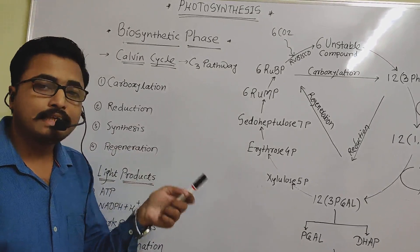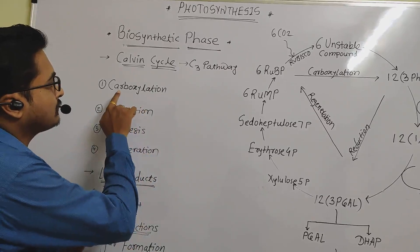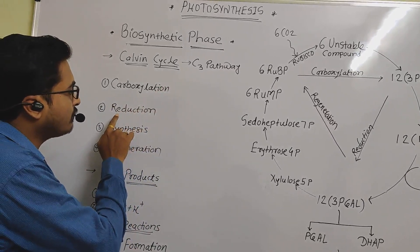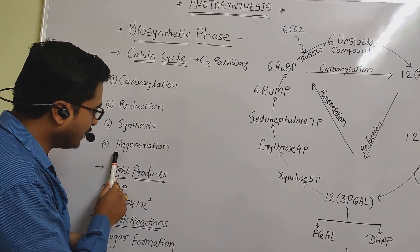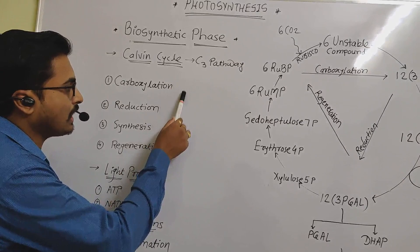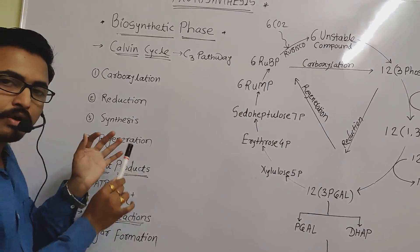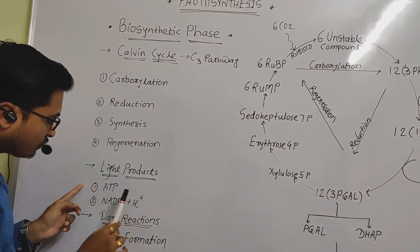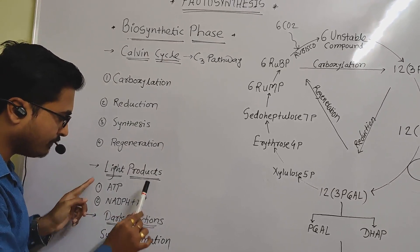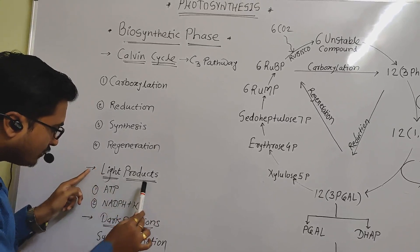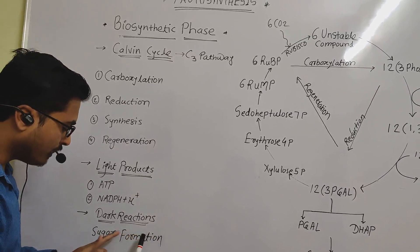The Calvin cycle has four main phases. First, we will learn carboxylation; second, reduction; third, synthesis; and fourth, regeneration. These are the four steps of the Calvin cycle. The products of light reaction — ATP molecules and NADPH+H⁺ — get utilized in the dark reaction, and here is the formation of sugar molecules.